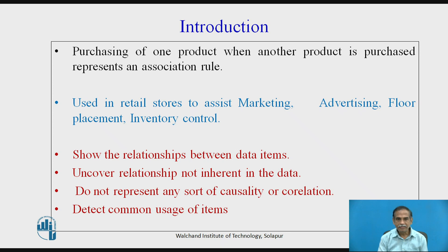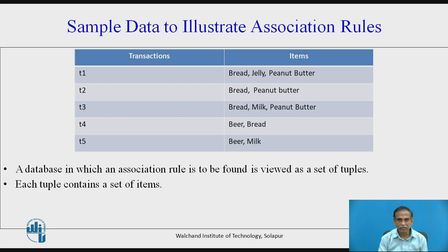Association rules do not represent any sort of causality or correlation — that is, one event depending upon the other event happening. And finally, we detect common usages of the items by using these association rules.